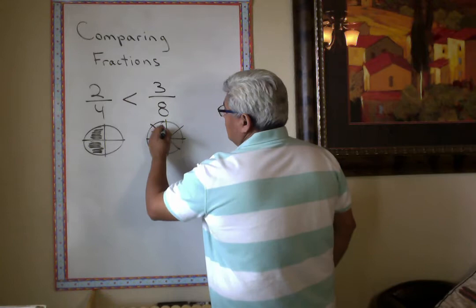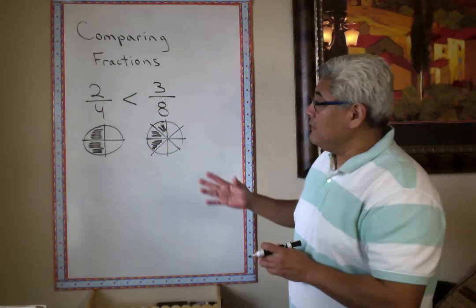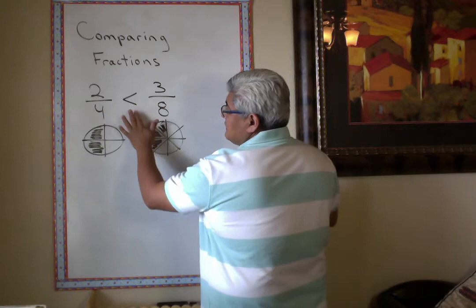Now, see, by looking at the pizza, at the 2 pizzas, I can see that this one is the greatest fraction. 2 out of 4 is greater than 3 eighths.